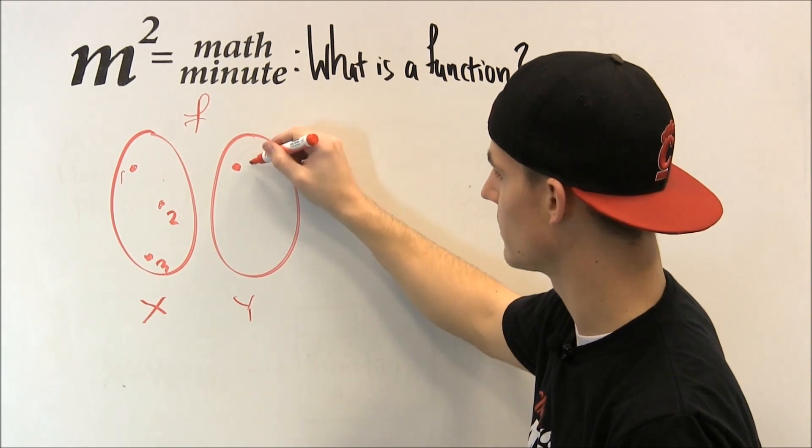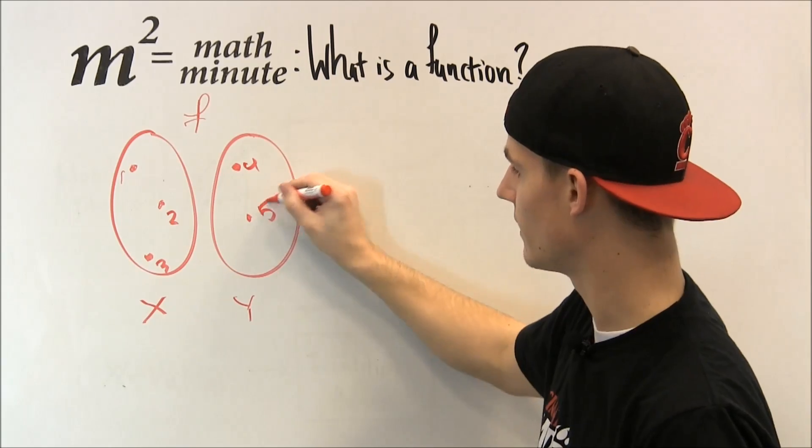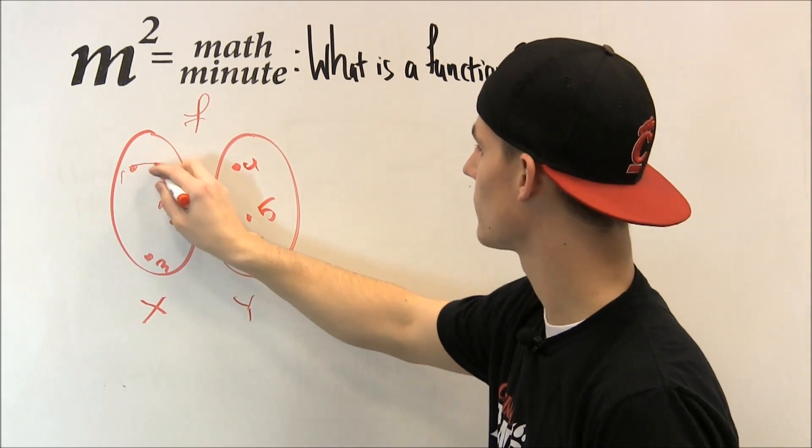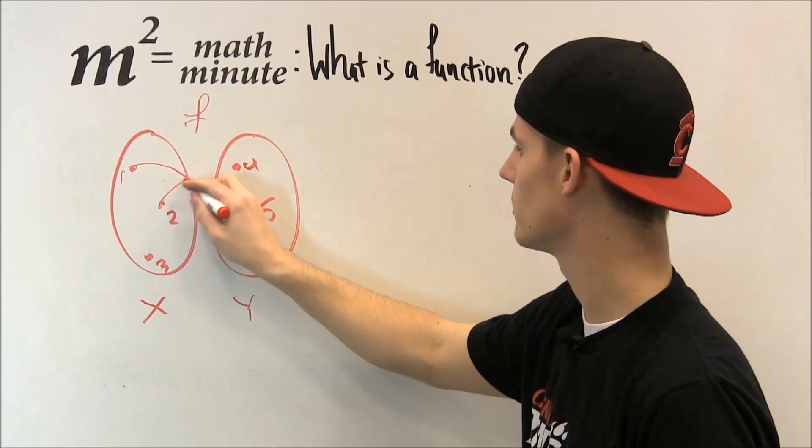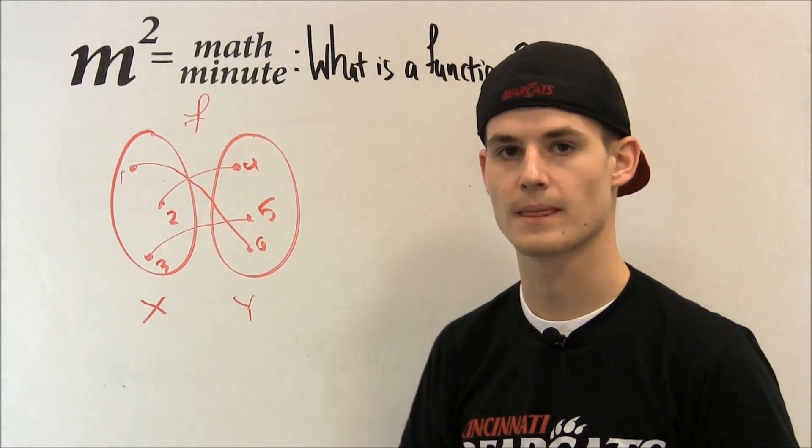We can say this is mapped to 4, 5, and 6. And we'll say 1 goes to 6, 2 goes to 4, and 3 goes to 5.